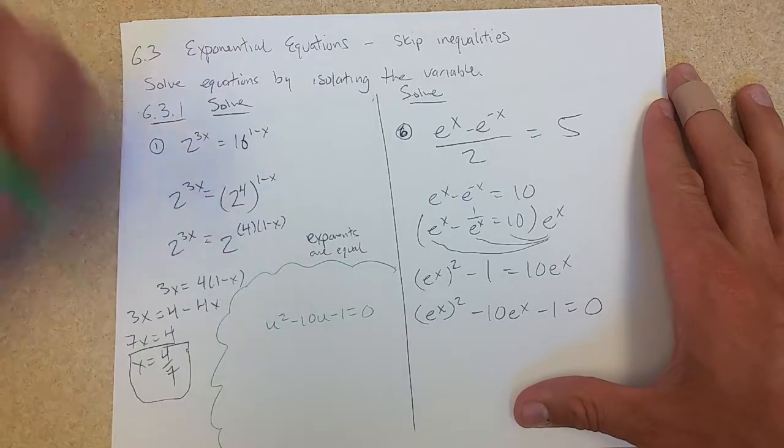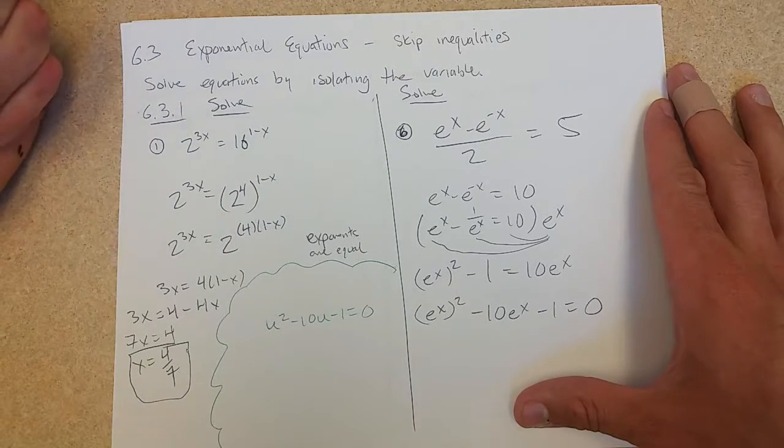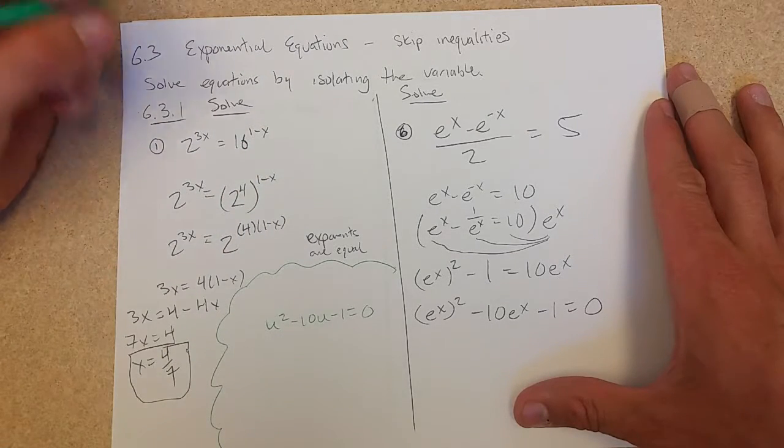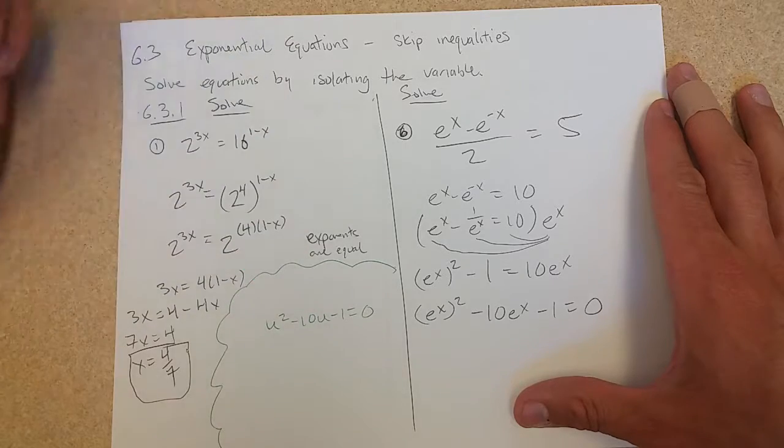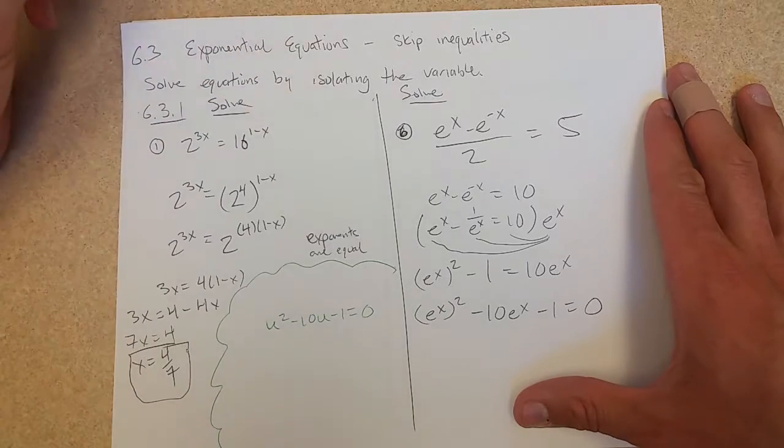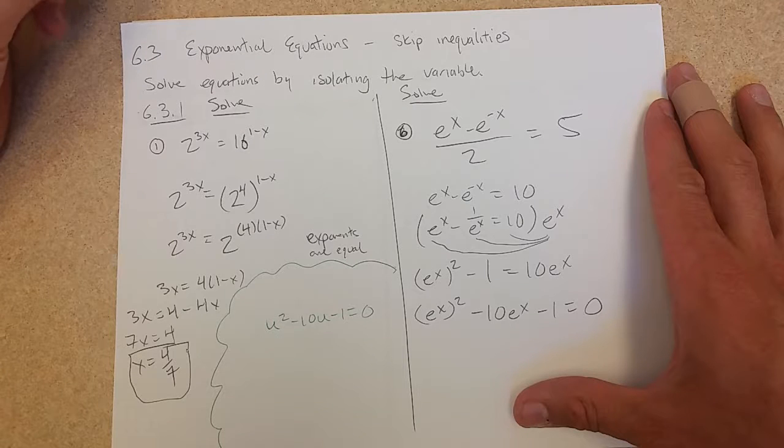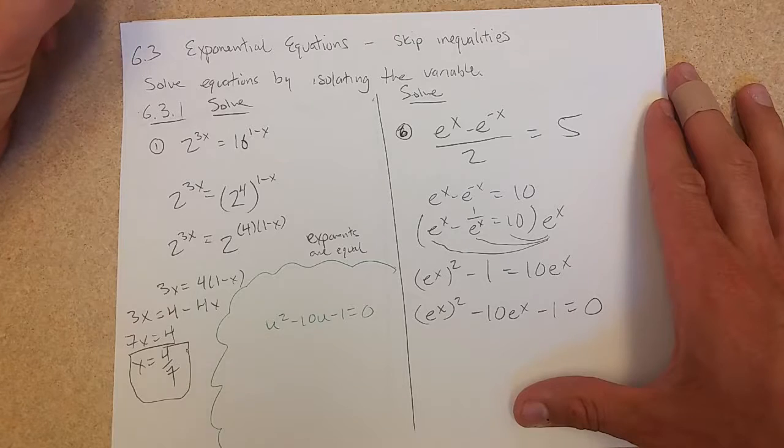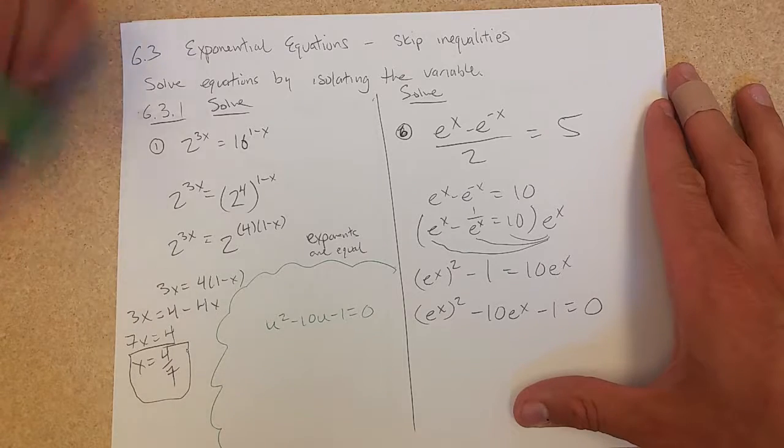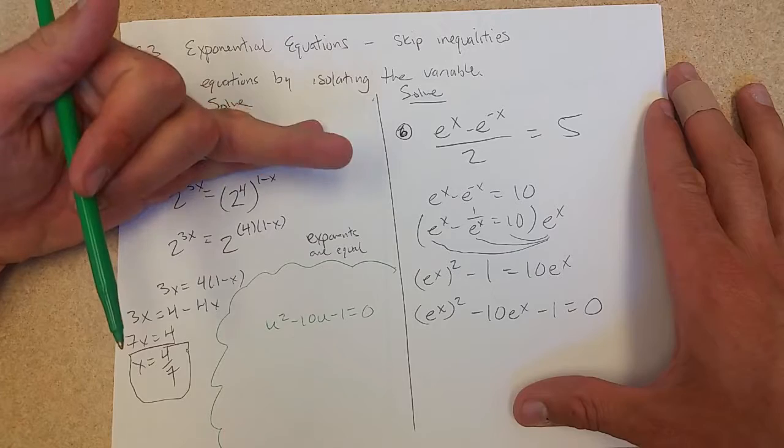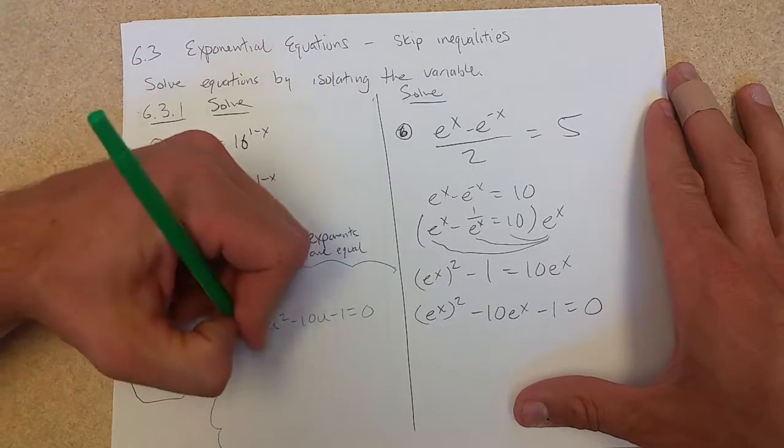So I have zero on this side. If I can factor, I'm going to be in business. So think about this as u squared minus 10u minus 1 equals zero. So this is your brain right here. How do we factor this? Hopefully it will factor nicely. Negative 10 multiply to make negative 1. I don't see how to do that. So when in doubt, you can complete the square or you can quadratic formula.